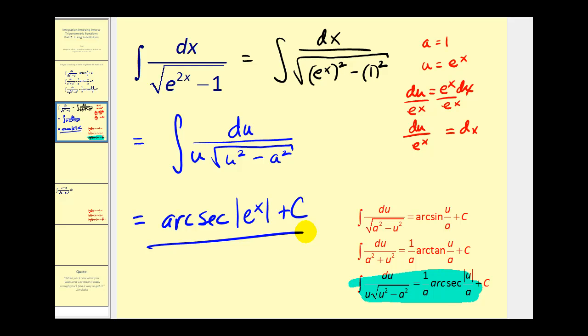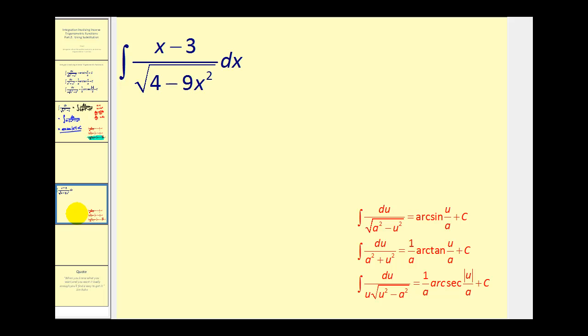Let's go ahead and take a look at another one that's not quite so obvious. Again, what's different about this one is that we have this binomial x minus three in the numerator. Again, it does not seem to fit the pattern of any of these. So we might be thinking we could just perform basic u substitution, but if we let u equal four minus nine x squared, du is going to be negative 18x dx, which again does not fit the numerator. So what we can do though is break this up into two different integrals, where we have x divided by four minus nine x squared dx minus three divided by the square root of four minus nine x squared dx.